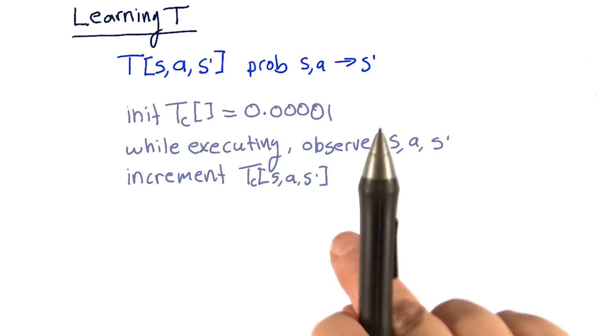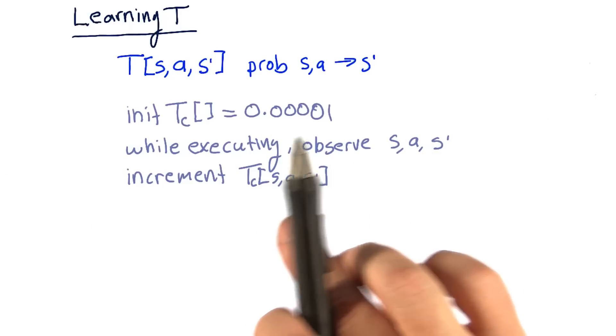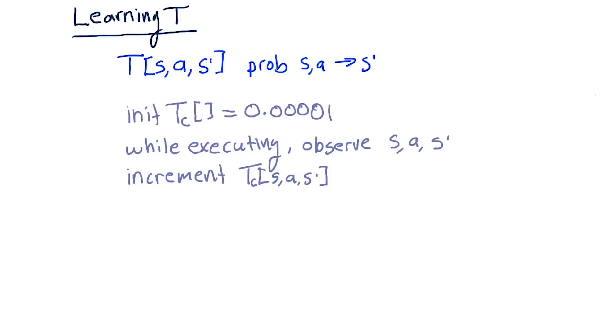So every time we see a transition from s to s prime with action a, boom, we add a one. And that's pretty simple. That's it.